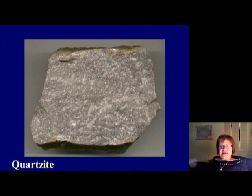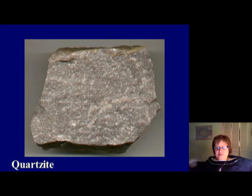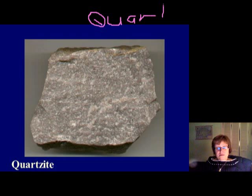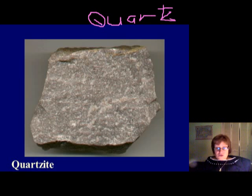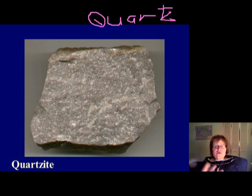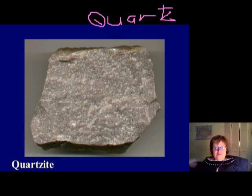Now for the non-foliated textures — grade doesn't really matter here. If you start with sandstone, which has only one mineral, quartz, then as it recrystallizes the only thing it can become is more quartz. So it becomes quartzite, with a crystalline non-foliated texture. Because of this, when you look at quartzite you cannot tell what grade it formed at — it could be low, medium, or high grade.